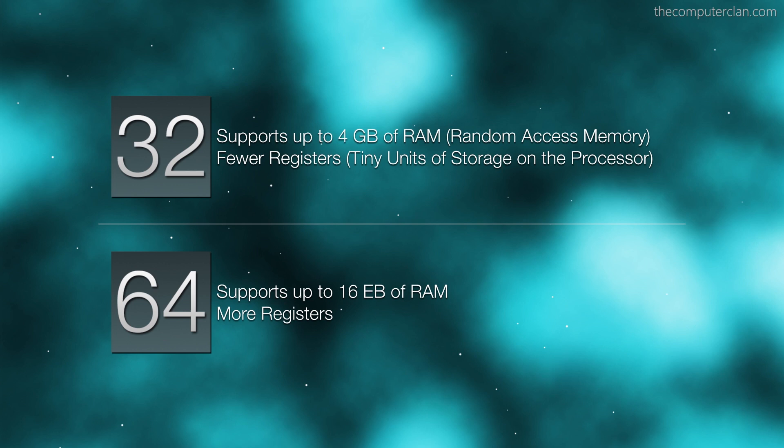Just to warn you, there are some exceptions. Some systems can use something called a PAE, a physical address extension, and that system can then use more than 4 gigabytes of RAM on a 32-bit system. But this is not common among consumers, especially in smartphones, so we won't get into all of that. We have some other videos that talk about some more advanced aspects such as that. But in a nutshell, to keep it simple, without any other modifications, a 32-bit system can support up to 4 gigabytes of RAM.